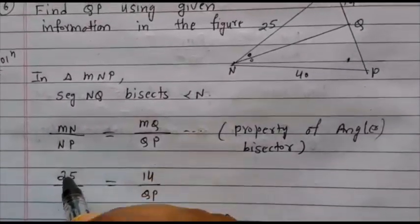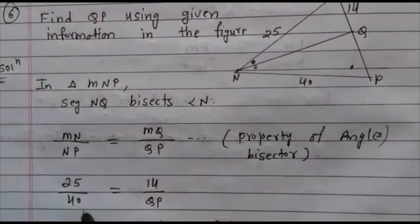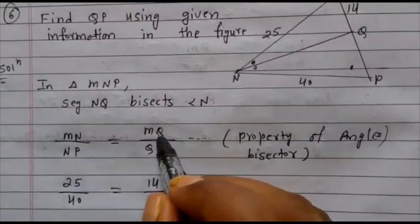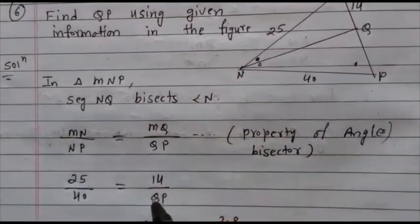Substitute the values. MN value is given as 25, NP value is given as 40, equals MQ value is given as 14 upon QP.